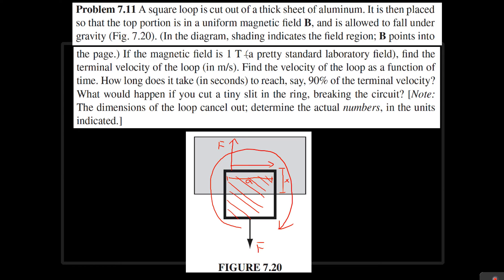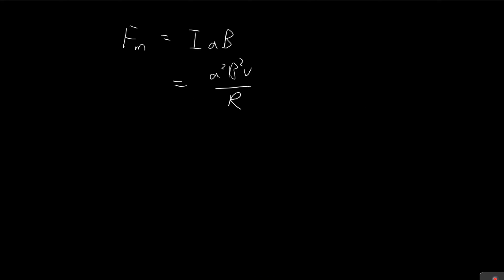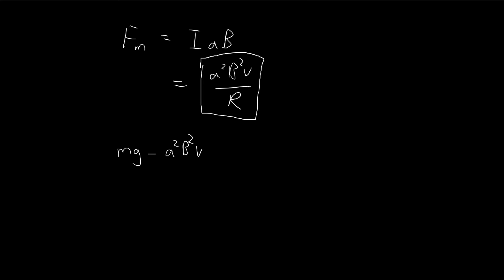Now let's set up an equation. The magnetic force points upward. For this problem, let's take downwards as positive and set up an F = ma equation. On the left-hand side we have all the forces: mg pointing down (positive) minus the magnetic force a²B²v/R pointing upward (negative). This equals mass times the change in velocity — mass times acceleration. This is our differential equation.